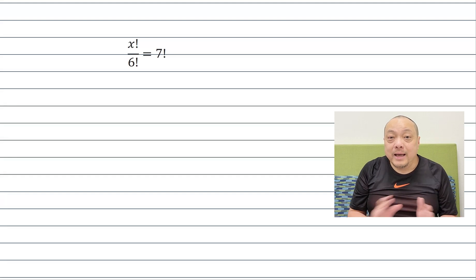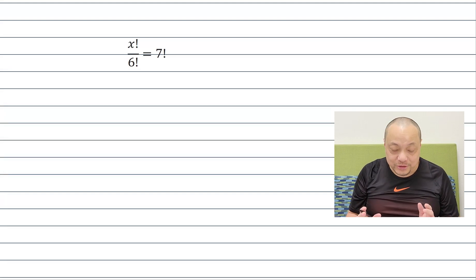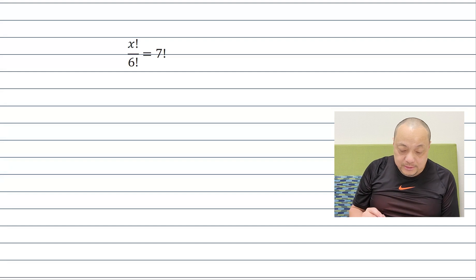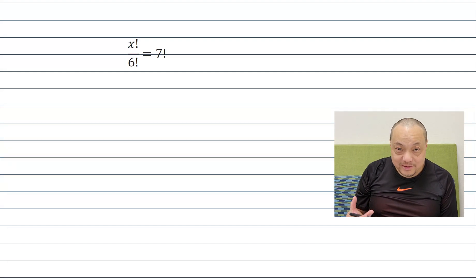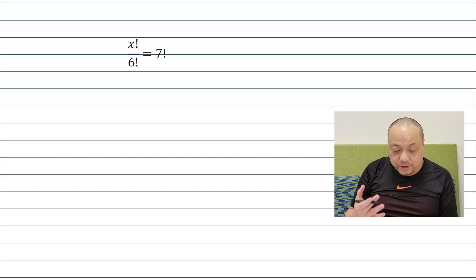Hi, a friend sent me this problem and I thought it's the cutest ever. So let's get into it. Solve for integer x such that x factorial divided by 6 factorial is equal to 7 factorial.